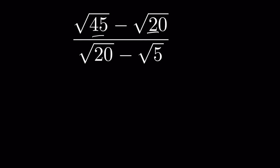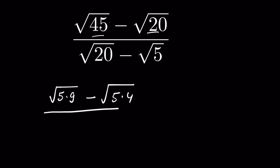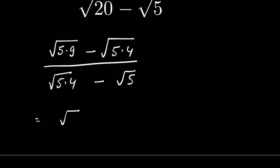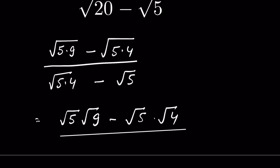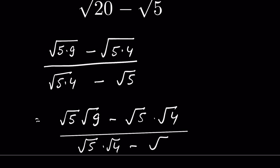For the second method, we first simplify the radicals. Square root of 45 is square root of 5 times 9, and square root of 20 is square root of 5 times 4. So the expression becomes: square root of 5 times square root of 9, minus square root of 5 times square root of 4, upon square root of 5 times square root of 4 minus square root of 5.